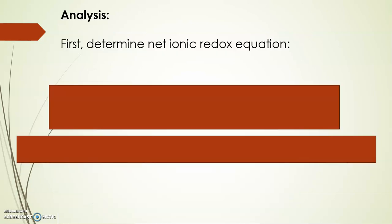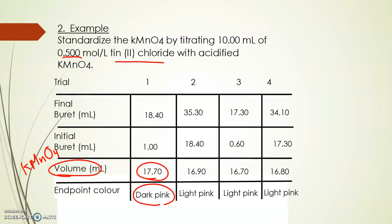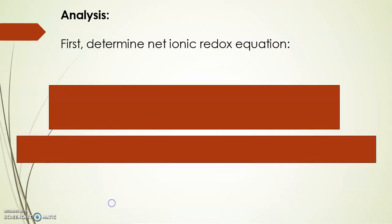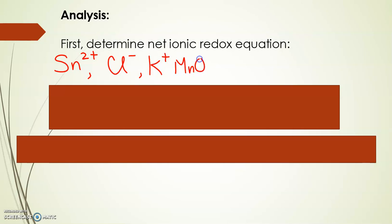In stoichiometry, you have to have a balanced equation, and the way you do that is you have to find the net ionic redox equation by listing your species. We have KMnO4 and tin(II) chloride in an acidic environment, so you have to list all your species. We have Sn2+, Cl-, and KMnO4 dissociates because it's soluble to K+ and MnO4-. It's an acidic environment, so we add H+, and water is a solvent so we list that too.